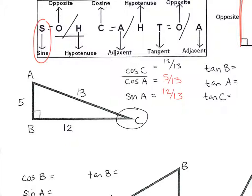For tangent of B: tangent is opposite over adjacent. The opposite would be 13, but the hypotenuse can't count as opposite — the hypotenuse is only the hypotenuse. At the 90-degree angle there are two adjacent sides, so we don't talk about the tangent, sine, or cosine of a 90-degree angle. We can't write a ratio for it. But for tangent of A, tangent is opposite over adjacent: opposite of A is 12, adjacent to A is 5 — not 13, because that's the hypotenuse — so it's 12 fifths. And tangent of C: opposite of C is 5, adjacent to C is 12, so it's 5 over 12.